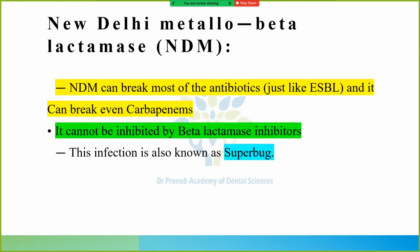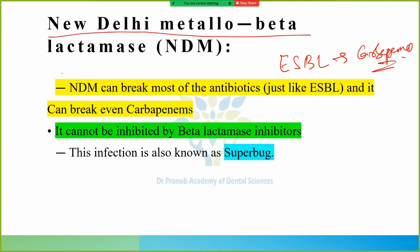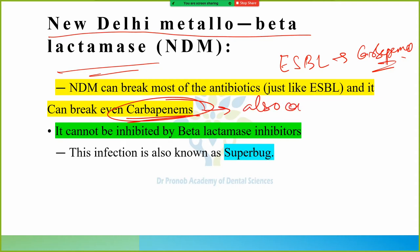Regarding extended spectrum beta-lactamase, carbapenem was working against it. But now bacteria developed further resistance, and we have New Delhi Metallo-beta-lactamase (NDM), which can break even carbapenem. Carbapenem also cannot work against NDM. Extended spectrum beta-lactamase was failed by carbapenem, but NDM is a step further — even carbapenem fails against it.